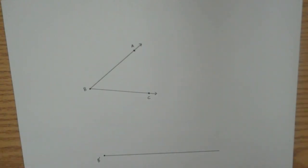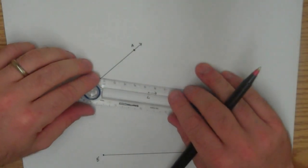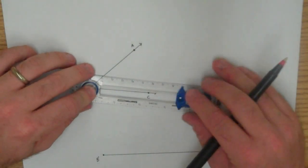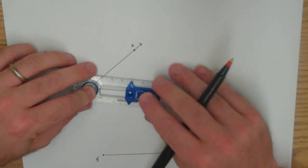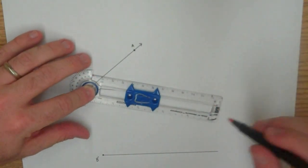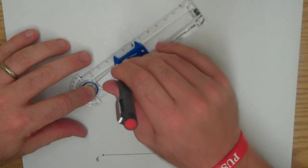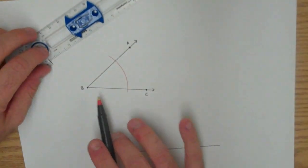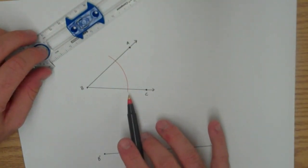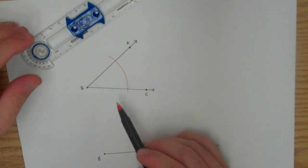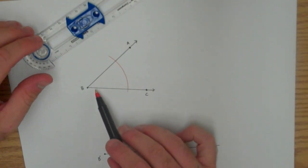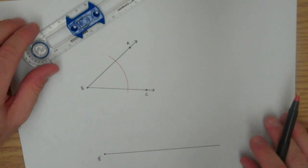Now what we're going to do is we're going to go back to our original angle, and we're going to create an arc. And the only requirements for that arc are that it intersects both sides of the angle. There's no requirement for how far the arc is from the vertex, but don't make it too close because you'll make it difficult for yourself. So give yourself plenty of room.